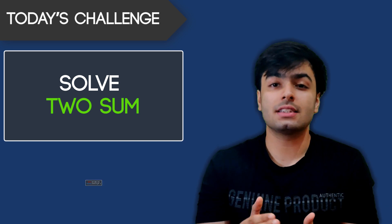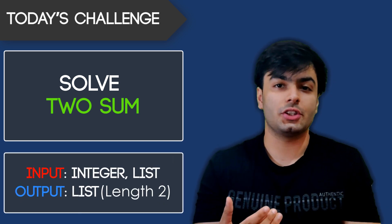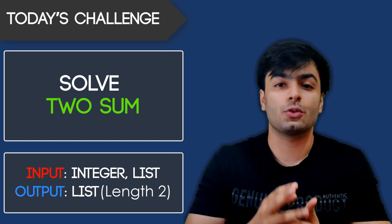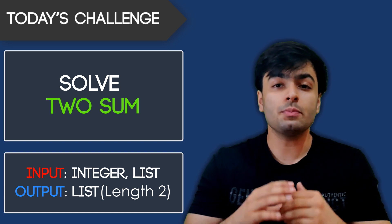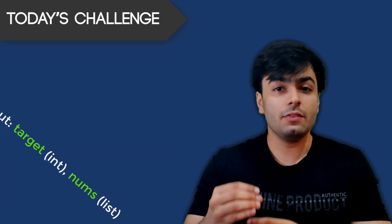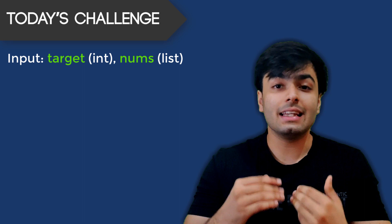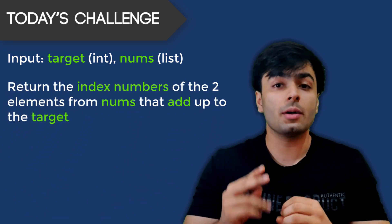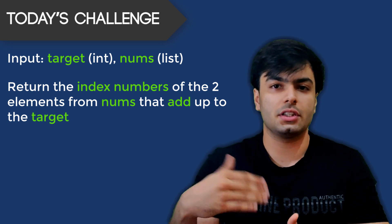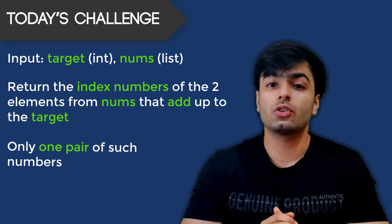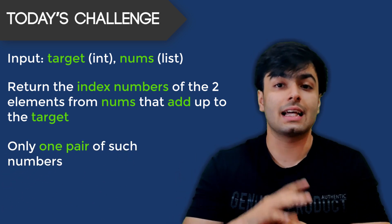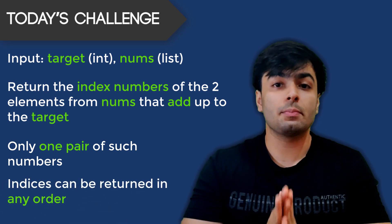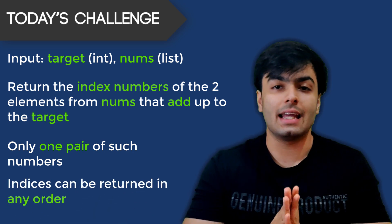Here's the task. The input consists of an integer and a list of integers and the output is a list of two integers. The 2sum problem is as follows. Given an integer called the target and a list of random integers, you must find the index numbers of the two numbers in the list that add up to the target. You must assume that there is only a single pair of numbers that add up to the target and that the pair of indices can be returned in any order.